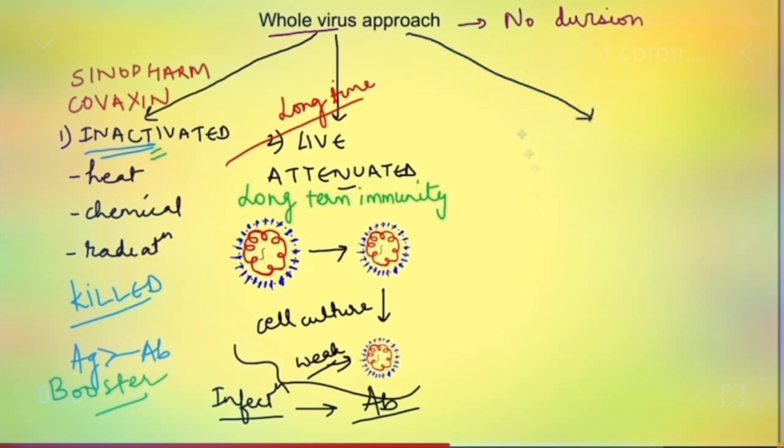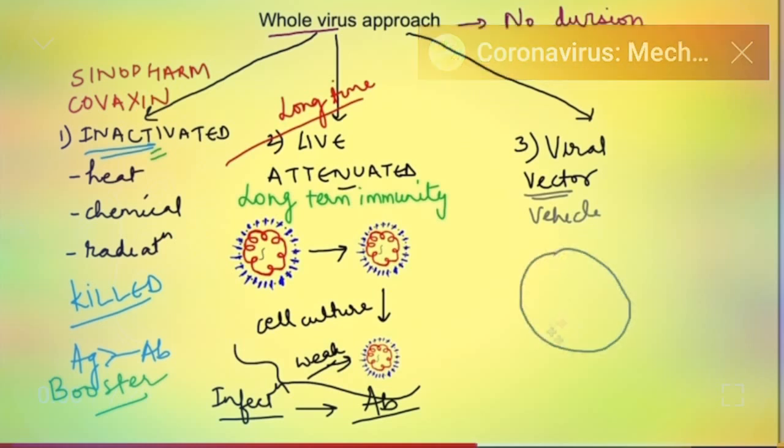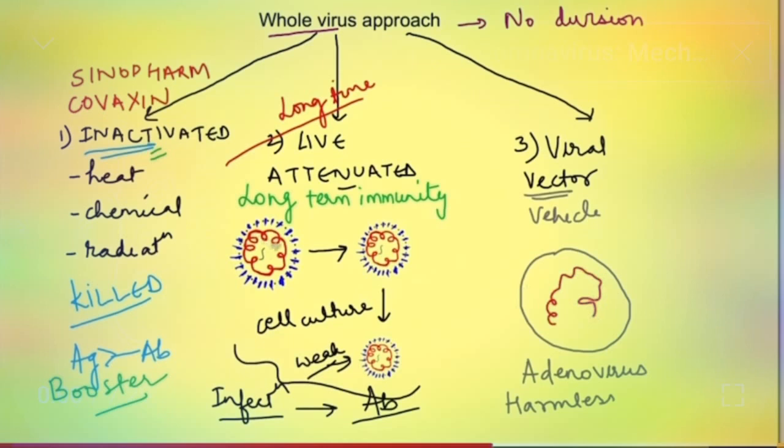Anyways there is a third subcategory in this whole virus approach. It is viral vector vaccine. In this we use some other virus as a vehicle for carrying the instructions for making proteins responsible for infection. For example the whole virus we use is an adenovirus which is a harmless virus it only causes common cold in us. So that whole virus is used and the genetic material which is responsible for production of spike protein of the coronavirus is integrated with the adenovirus genome.